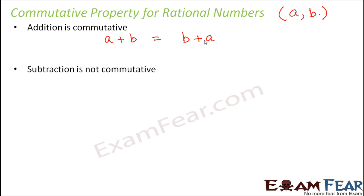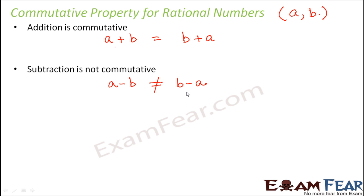Will this commutative property hold true for subtraction? Not really. That means in subtraction, a minus b is not equal to b minus a. In both these cases you get different values, so we say that subtraction is not commutative.